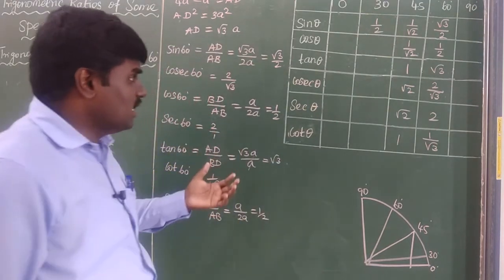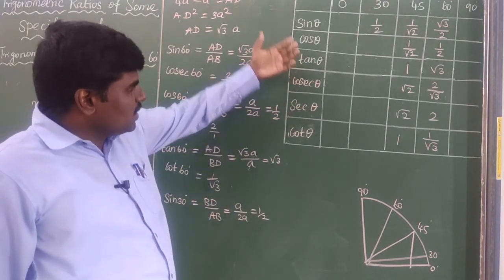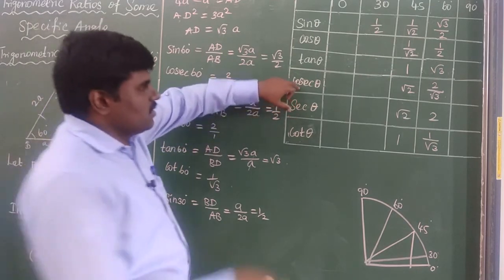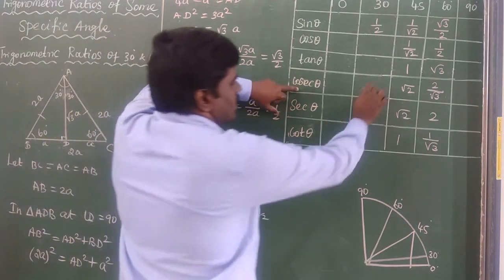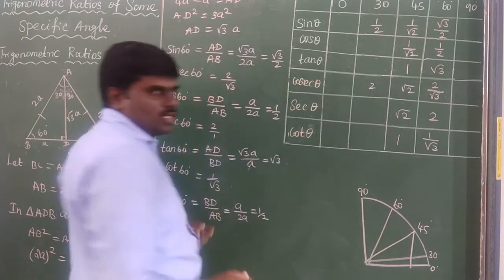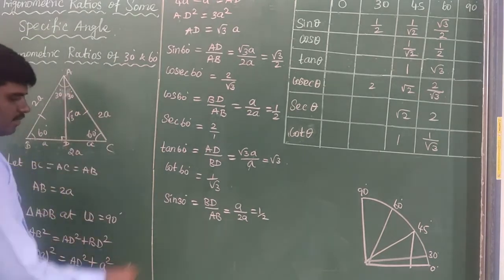Sin 30° = 1/2, so automatically cosec 30° is the reciprocal of sin 30°, giving cosec 30° = 2.